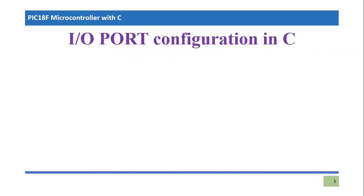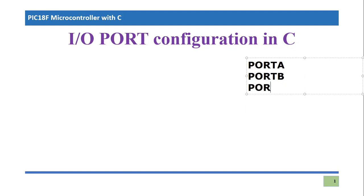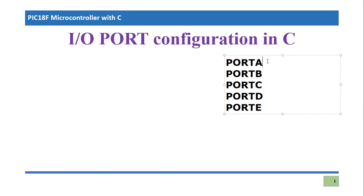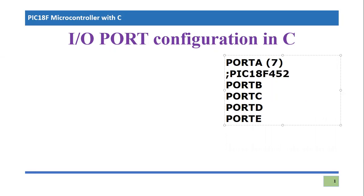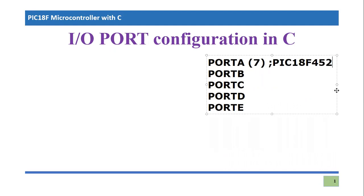I have already done a series on PIC 18 microcontroller assembly language programming. In that series I explained there are various ports — port A, port B, port C, port D, and port E. So there are five different ports available. I am talking about PIC 18F452 specifically. Port A has seven pins, port B has eight pins, port C has eight pins, and port D also has eight pins. Every other member of PIC 18 has different numbers of pins in each port.